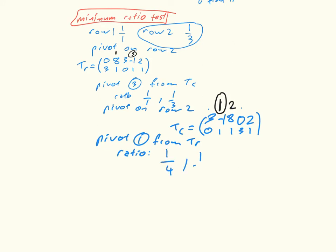Pivot on row 1. This will give me Tr equals 0, 8, 3, minus 1, and 2, because that's not going to change. And so I multiply the second row by 8 and take the first row away from it. So I get 24, 0, minus 3, 9, and 6.